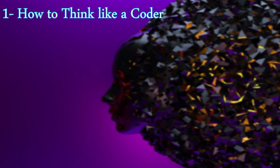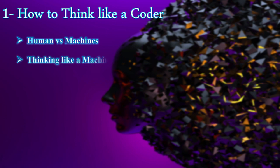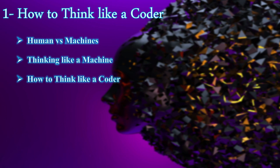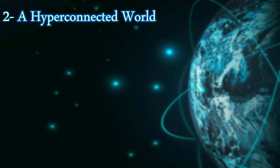This is an outline video for this course. We're going to see the titles and subtitles of this course. The first section is about how to think like a coder. The first subtitle is 'Human versus Machines,' where we compare human and machine abilities. The next subtitle is 'Thinking Like a Machine,' followed by how to think like a coder — like a programming or web developer.